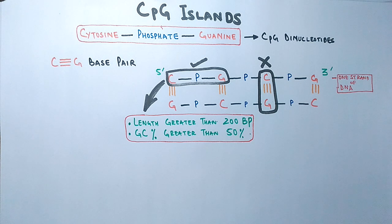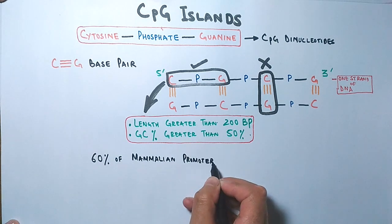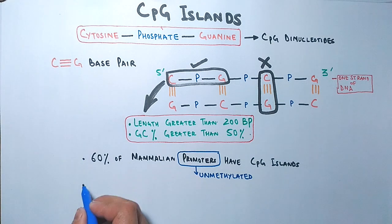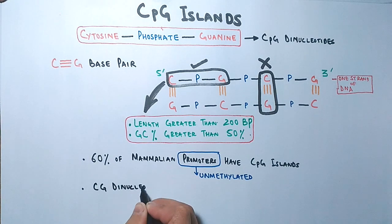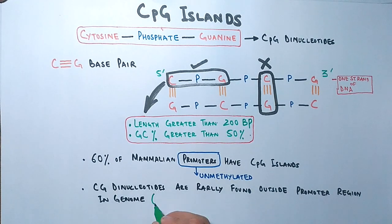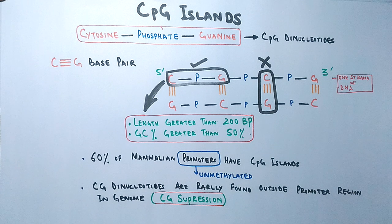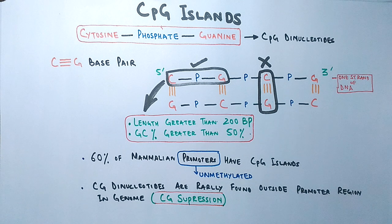Notably, 60% of mammalian promoters have CpG islands, but they are mostly unmethylated. CpG dinucleotides are rarely found outside the promoter region due to the phenomenon of CpG suppression, which eliminates mutations. This is because CpGs are prone to methylation — cytosine when methylated forms 5-methyl cytosine, which can spontaneously turn into thymine through deamination, inducing mutation. That's why CpG suppression exists in the genome through evolution.